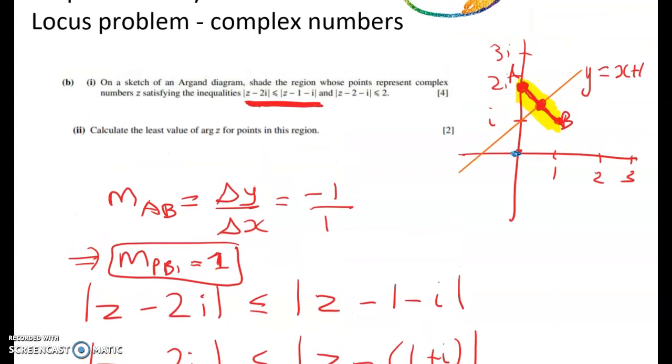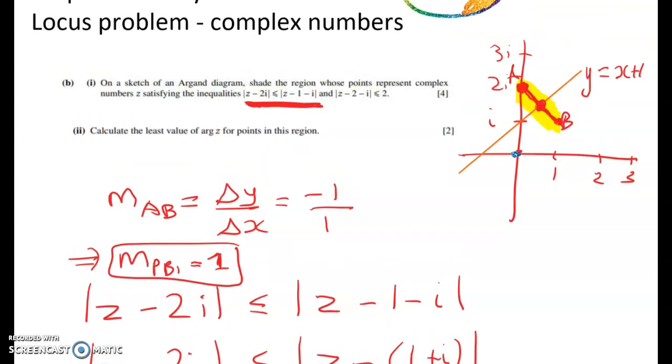And you can see that I've got a really, really bad graph here. I'm going to add to that bad graph by doing a bad graph for my circle now. So we've got the perpendicular bisector part of the locus. We'll worry about the inequality later.